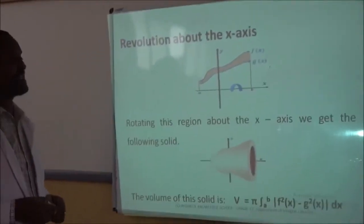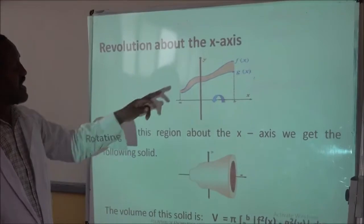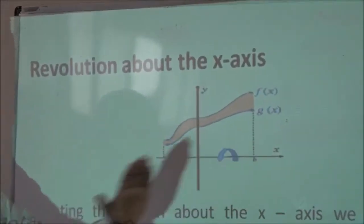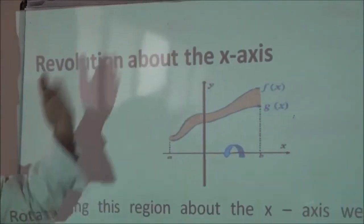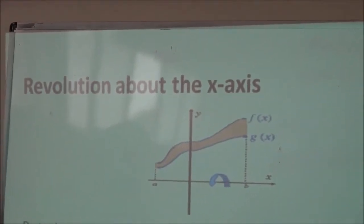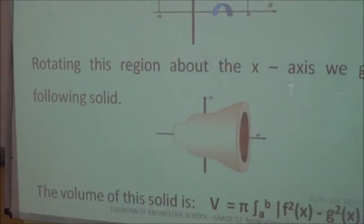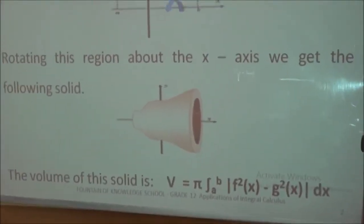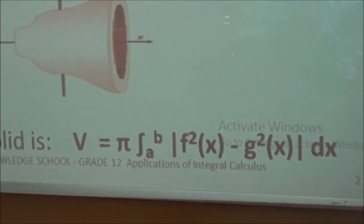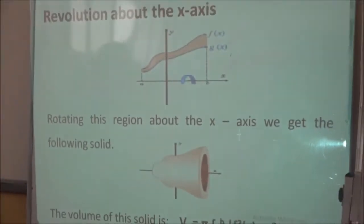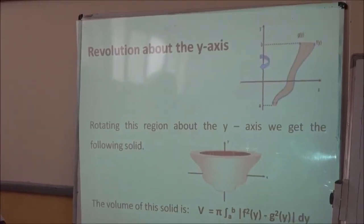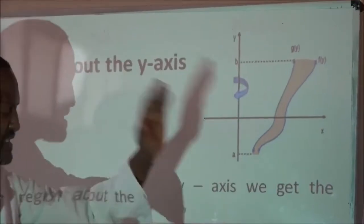For revolution about the x-axis, suppose you have a region bounded by two curves f and g on the closed interval [a, b]. Revolving this region about the x-axis produces a solid figure, and the volume of this solid can be obtained by the formula: V = π times the integral from a to b of the absolute value of f(x) squared minus g(x) squared dx.